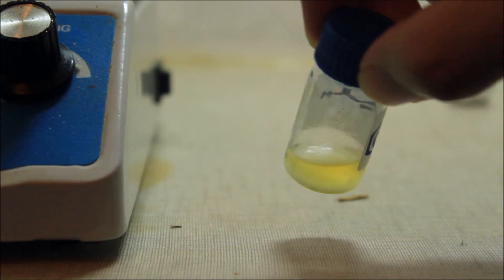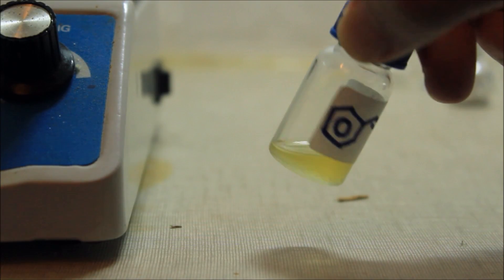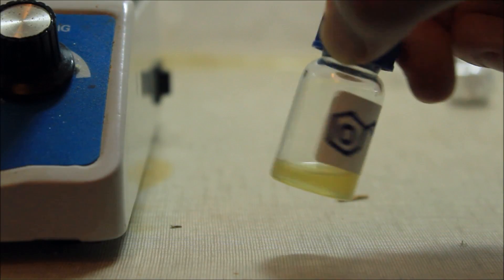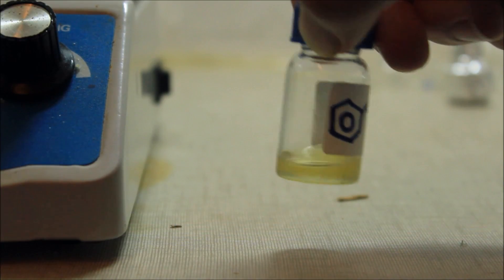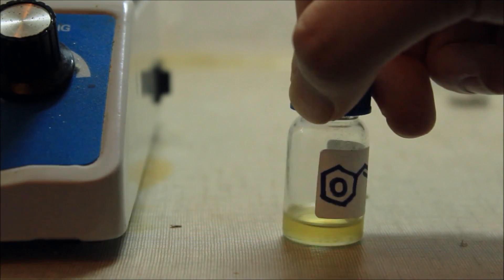This is mainly cinnamaldehyde but it also contains some other major components as eugenol. The final yield was 0.50 g of crude and dried cinnamaldehyde, which is close to the expected yield.